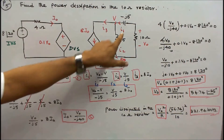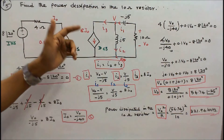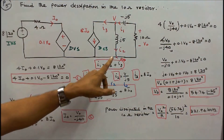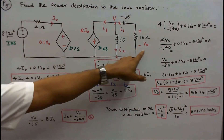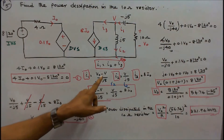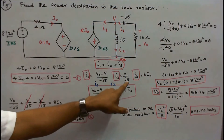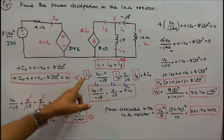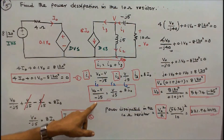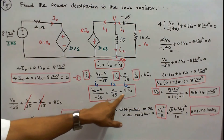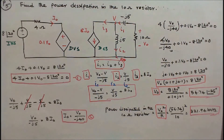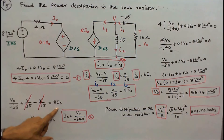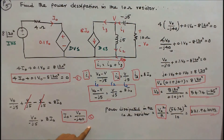Labeling currents I1, I2, and I3, apply Kirchhoff's current law: I1 equals I2 plus I3. I1 equals (V0 minus V) divided by (minus j5), I2 equals V divided by j5, and I3 equals 8 times I0. Substituting: (V0 minus V) divided by (minus j5) equals V divided by j5 plus 8 times I0. Simplifying gives V0 divided by (minus j5), and canceling V terms gives I0 equals V0 divided by j40. This is equation 2.